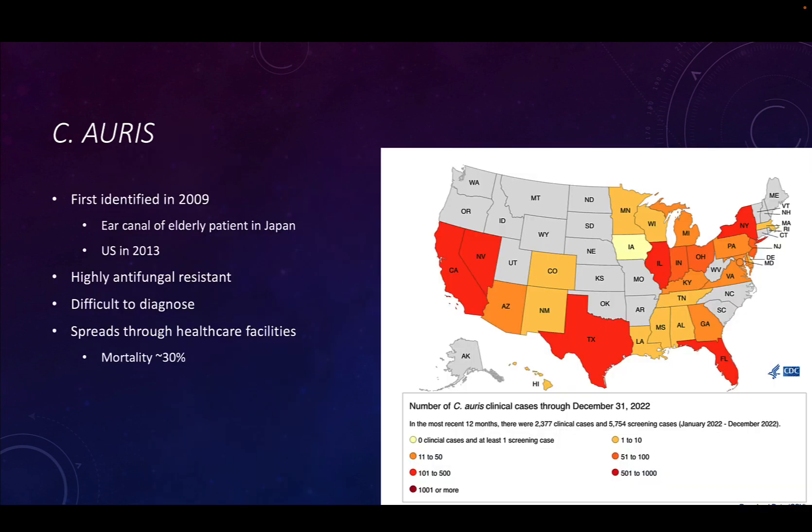The last thing to discuss about Candida is not from the textbook because it's relatively new: a species called Candida auris. It's called that because it was first identified in the ear canal of an elderly patient in Japan in 2009. By 2013, it was identified in the US.